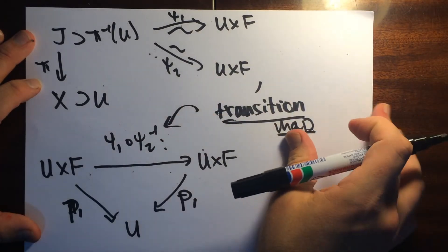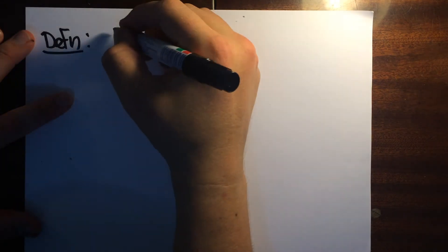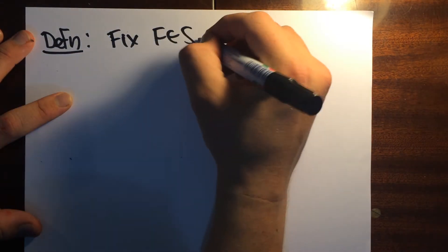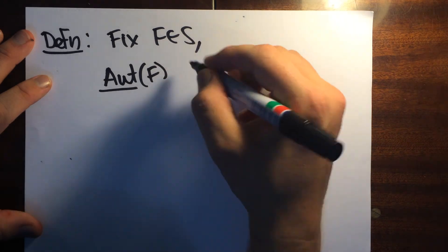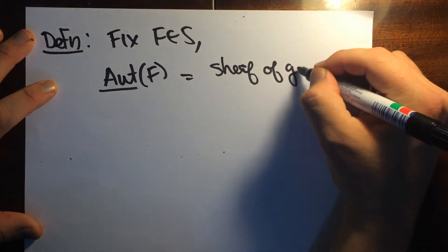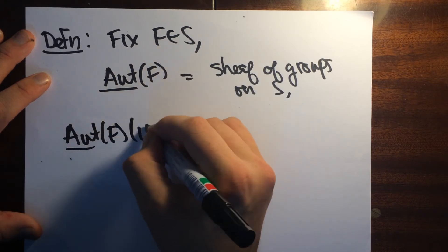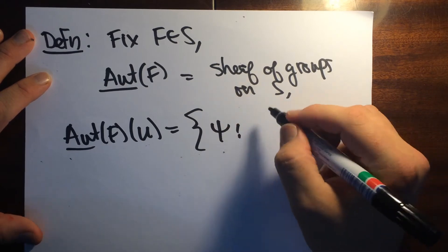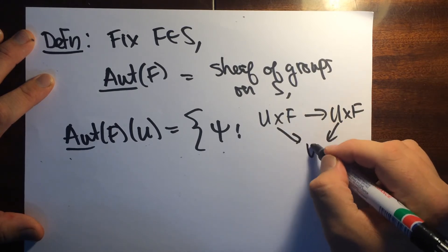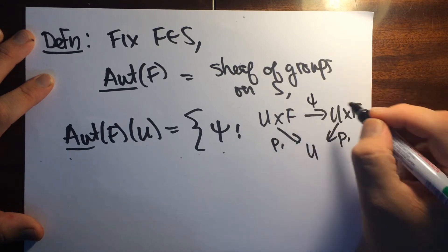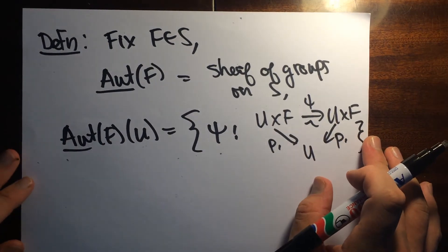Let me tell you where it lives. Definition: Fix F and S. I can define this sheaf of groups, a sheaf of groups on S. What it does is when you plug in an open set, it gives me isomorphisms from U cross F to U cross F, this is the projection. These are automorphisms of F. So this is what this sheaf of groups looks like.